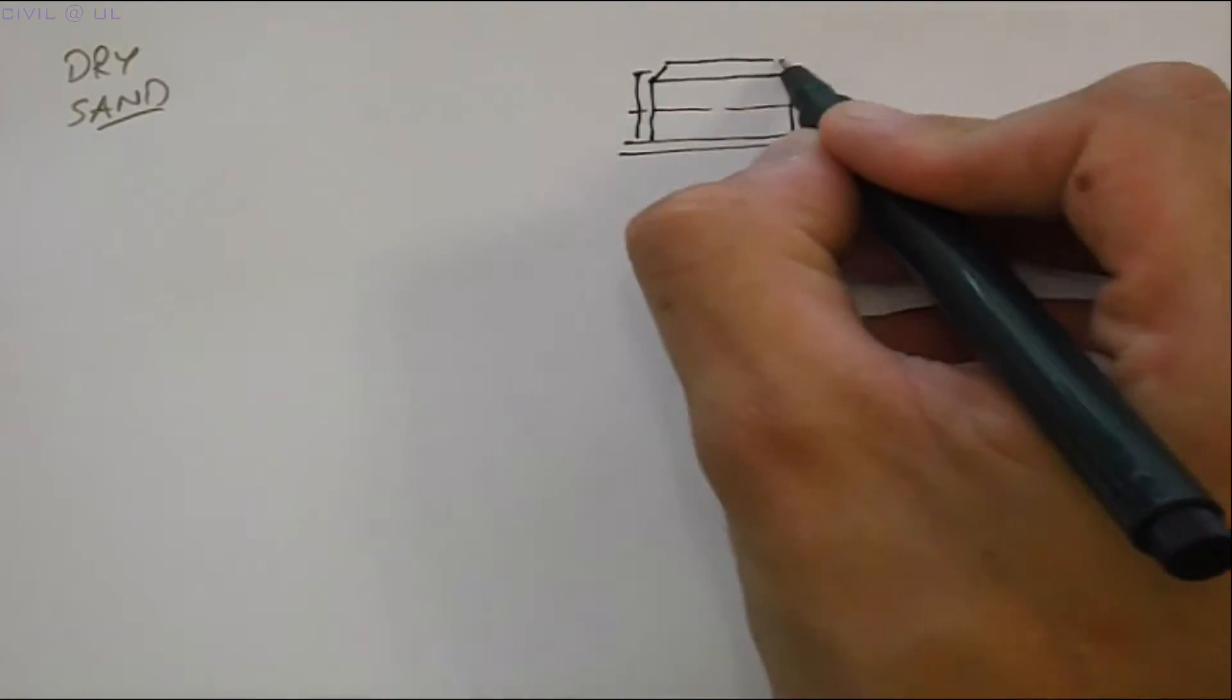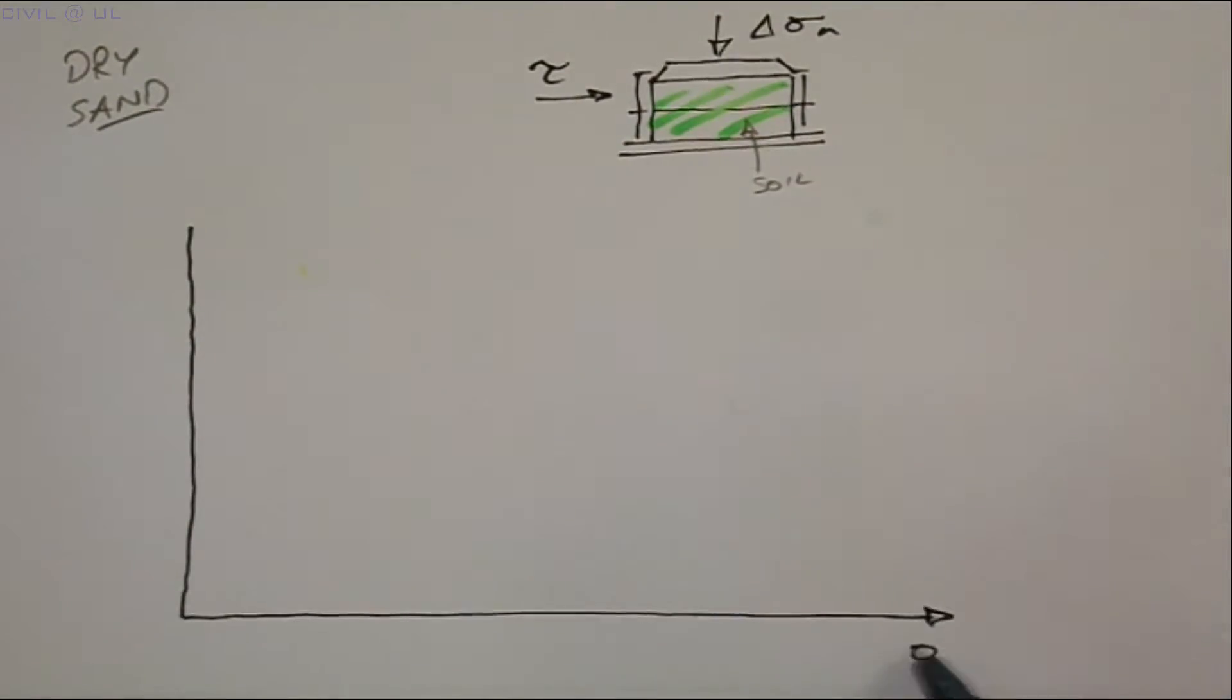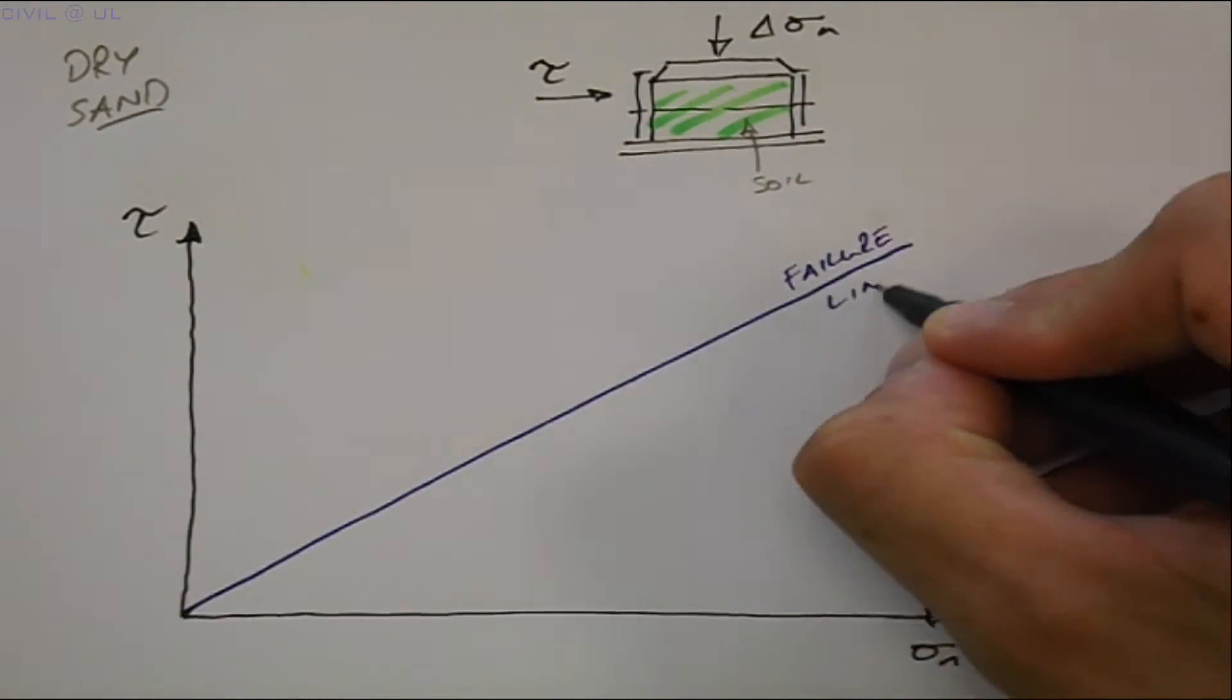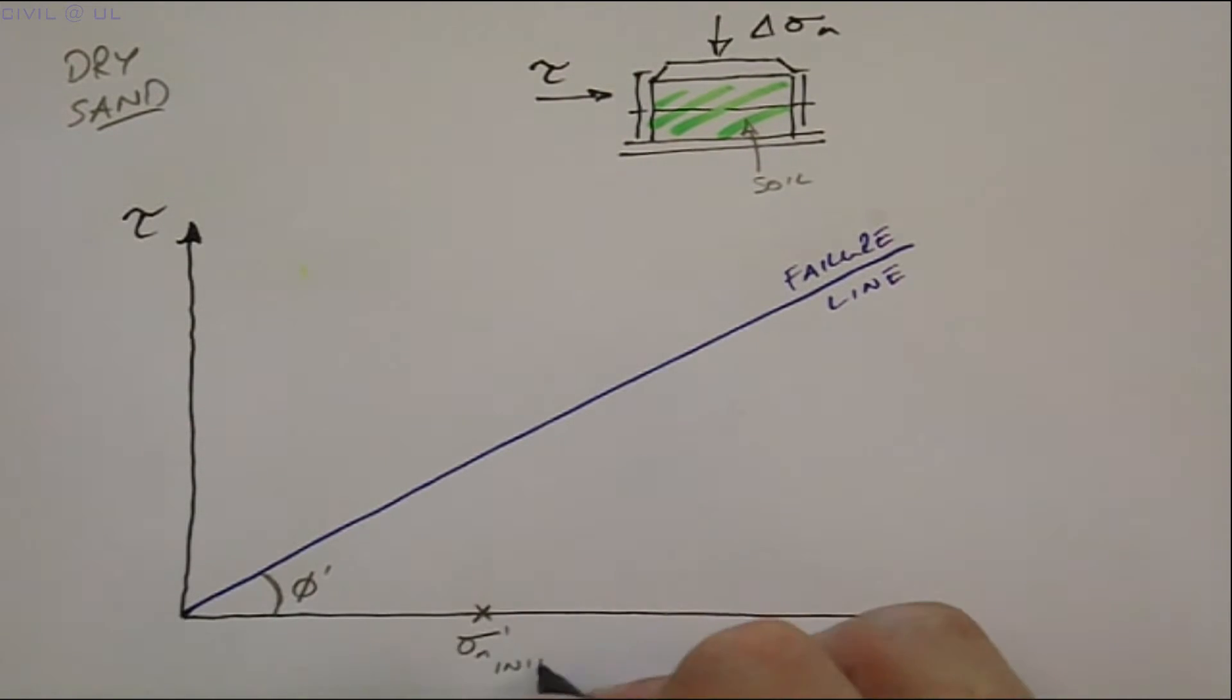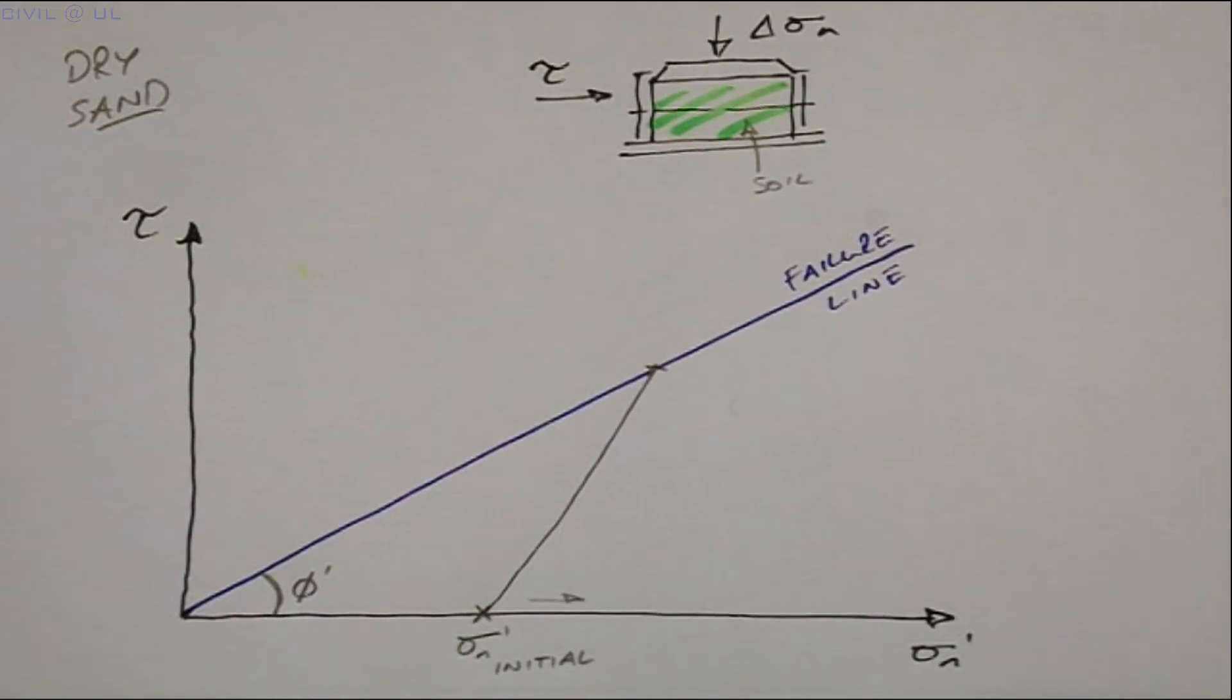Let's portray three shear box tests on dry sand. We're obviously dealing with effective stresses in this case, but note that this is not a precondition. In our first test we will apply an initial normal stress and then increase this as the sample is sheared. This gives us the following trajectory with failure occurring when the stress path reaches the failure envelope, giving a shear strength tau L for loading.